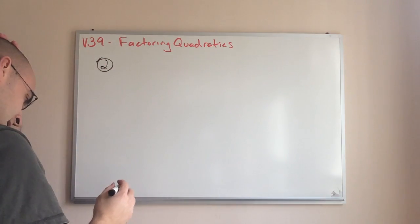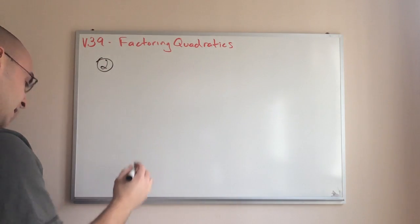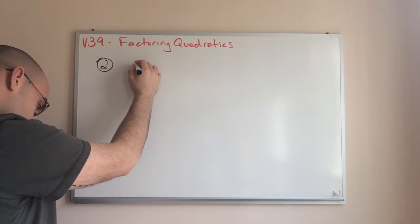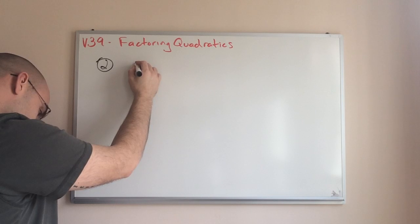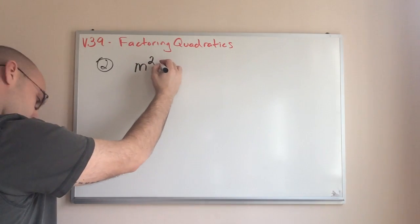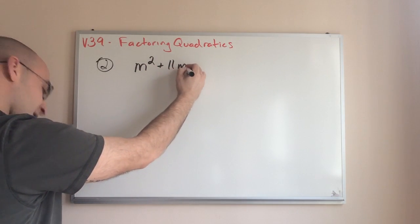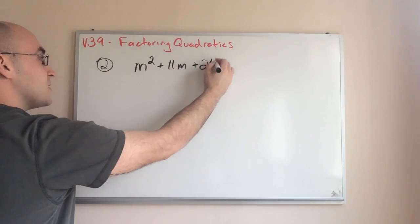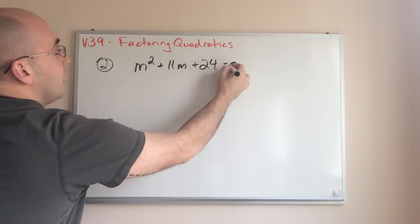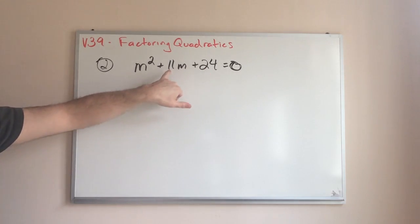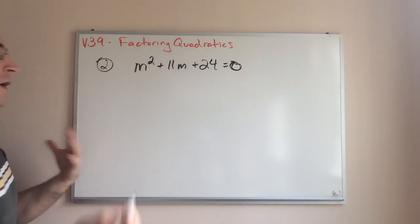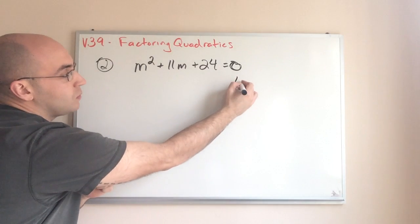All right. Let's go with. All right. M squared plus 11M. I'm trying to find an easy one that isn't too bad. Plus 24 equals zero. Okay. Remember, I am looking for factors of the last term that could add or subtract to get 11. So, if you want to work it out, some factors of 24.